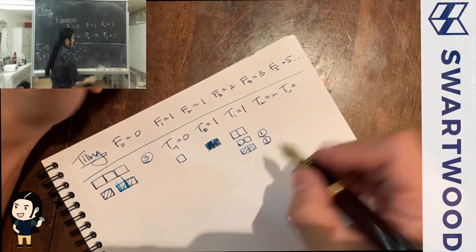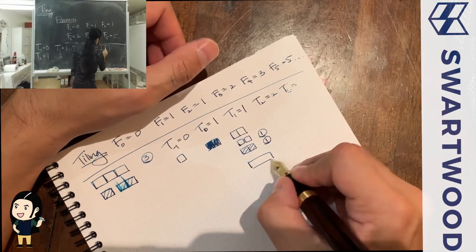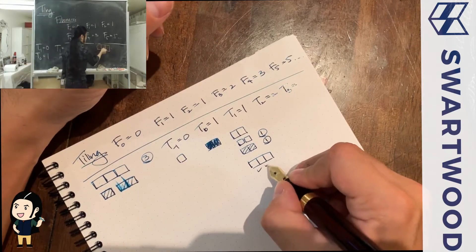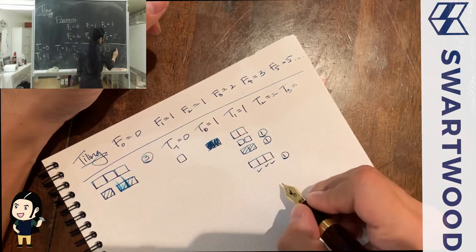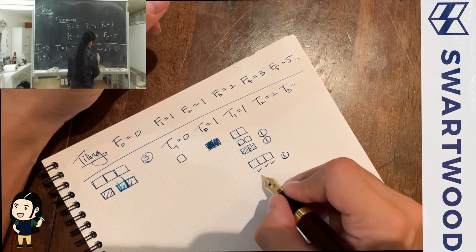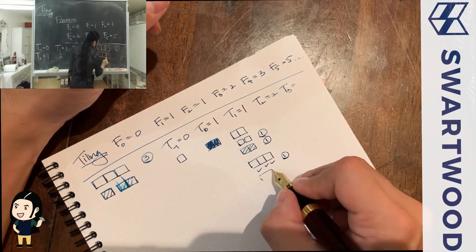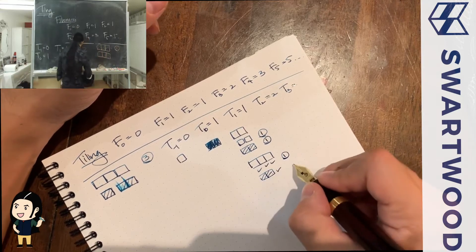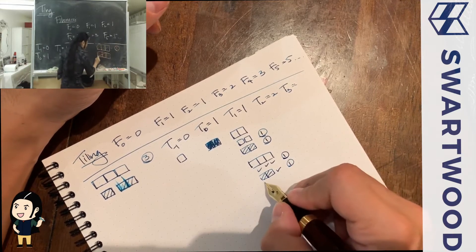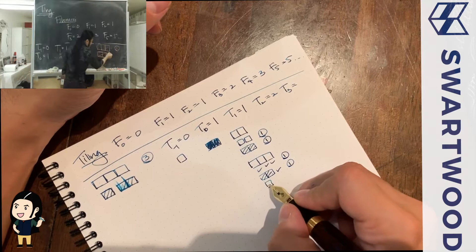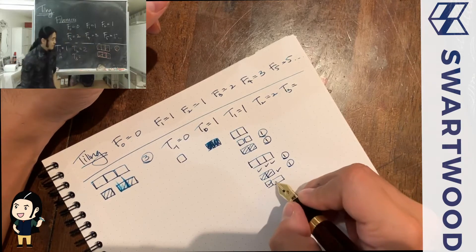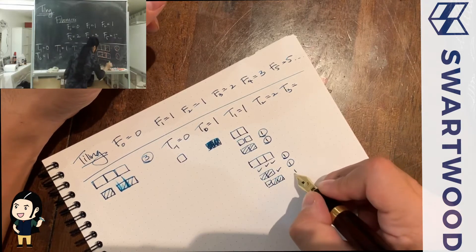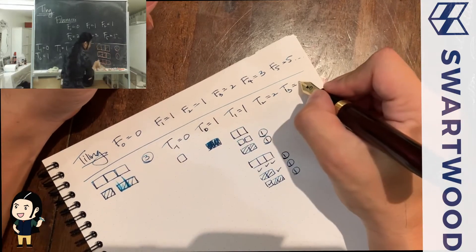Let's make it more interesting — T(3). If the board is composed of three squares, how many ways can you cover it? You can go square, square, square — that's one way. You can do a domino and then a square — that's the second way. And you can do a square and then a domino — that's the third way. So T(3) = 3.